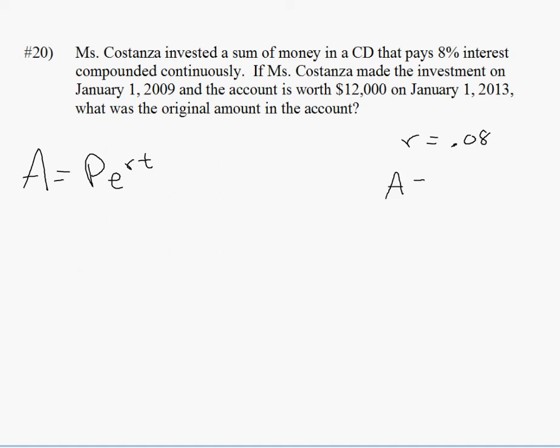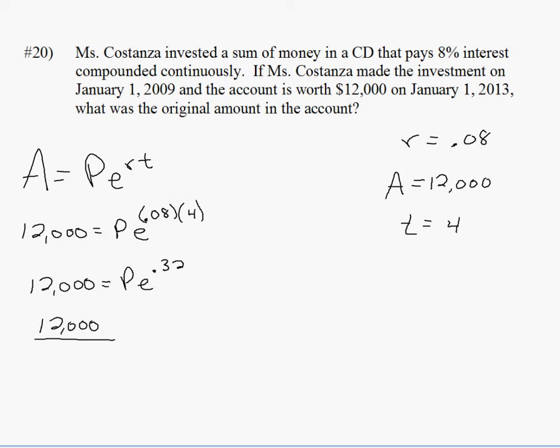Well, the interest rate is 0.08. The account after four years, $12,000, and the time it was invested was for four years. Put those numbers into the formula. Simplify your exponent. 0.08 times 4 is 0.32. Divide both sides by e to the 0.32 to get P by itself. Put it in your calculator. You get $8,713.79.